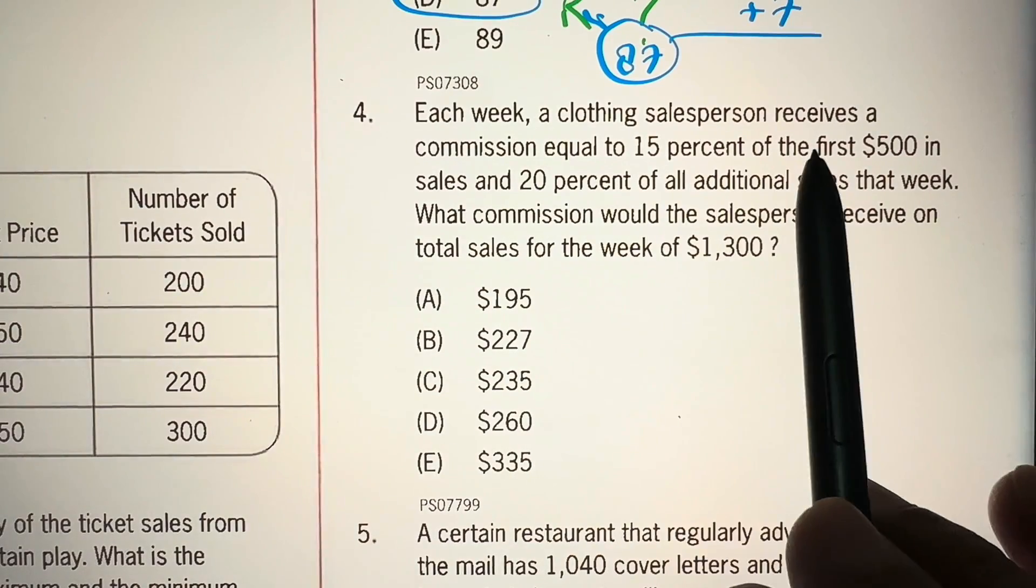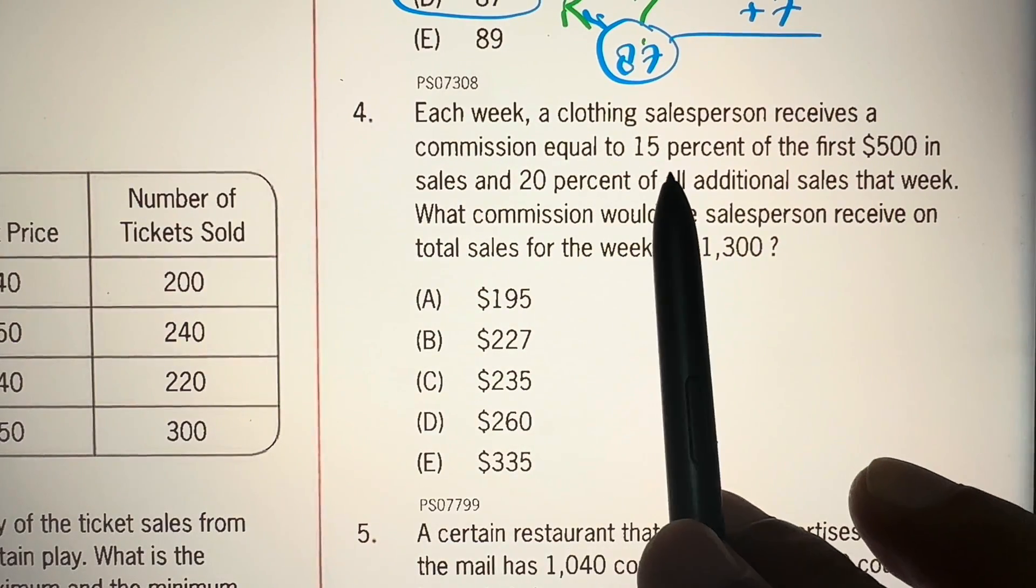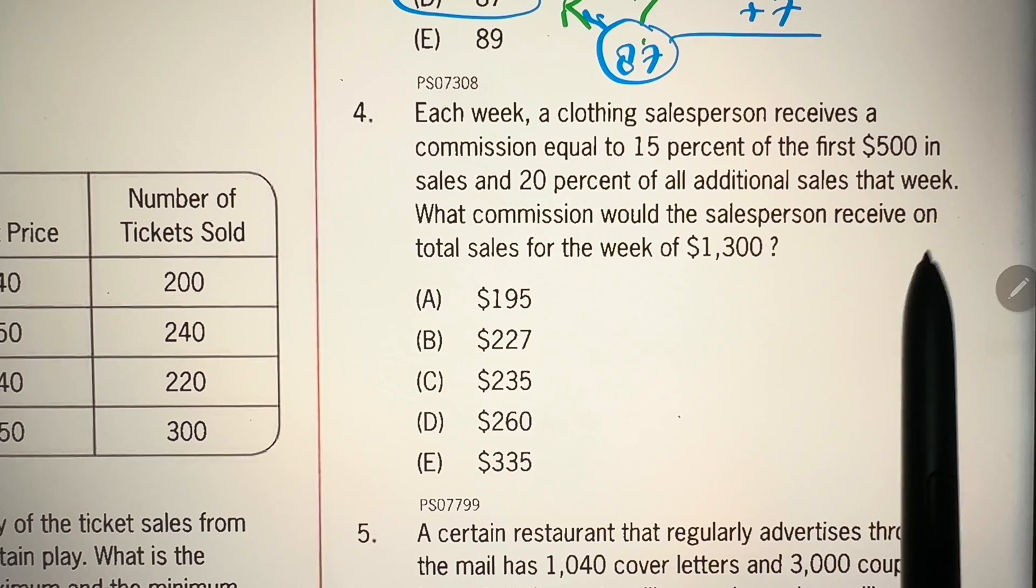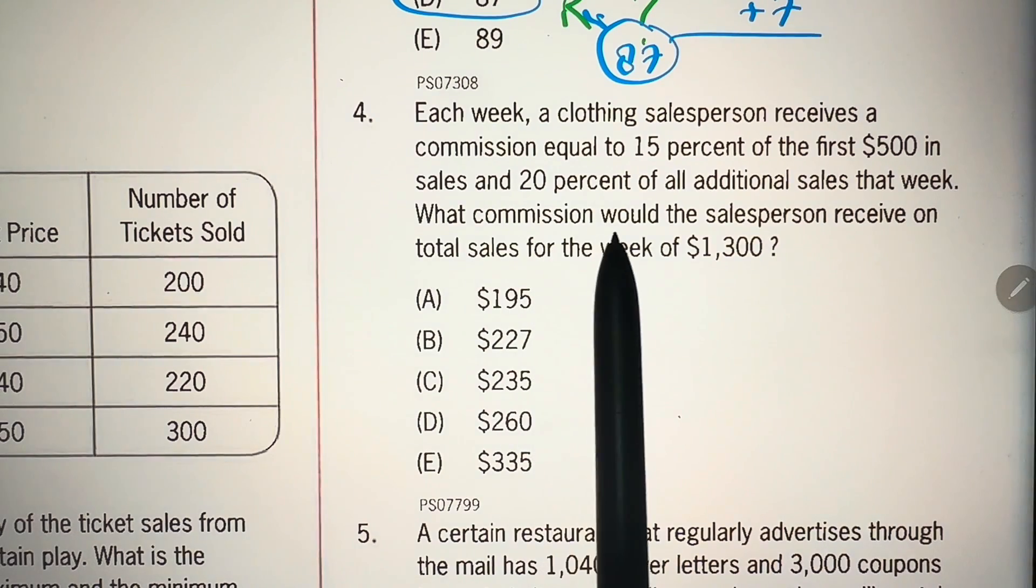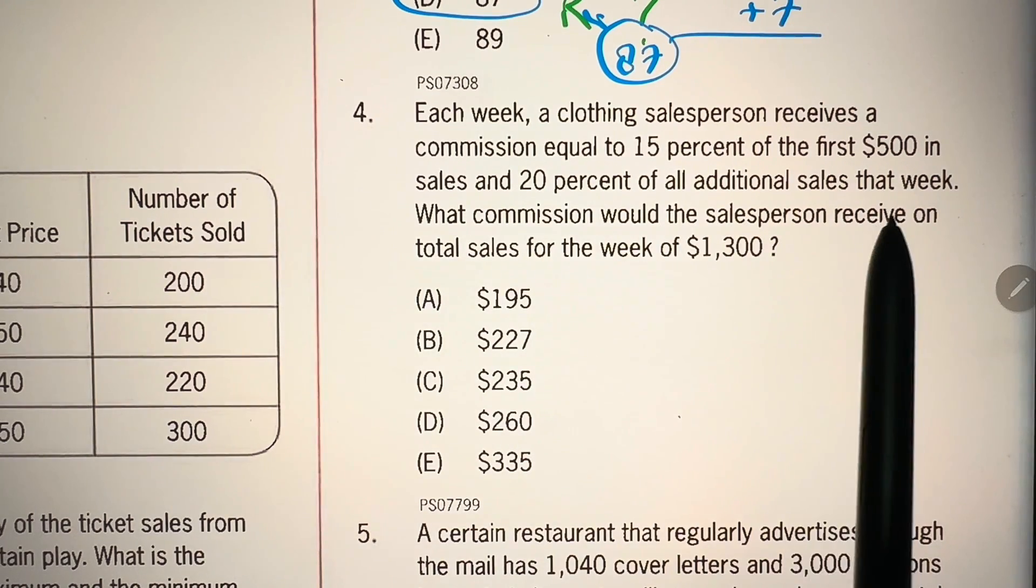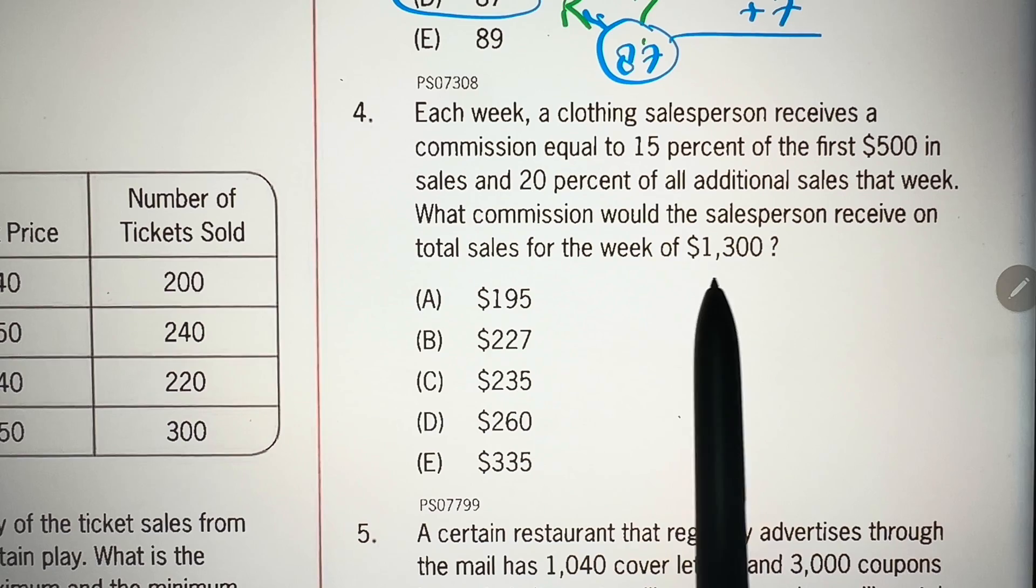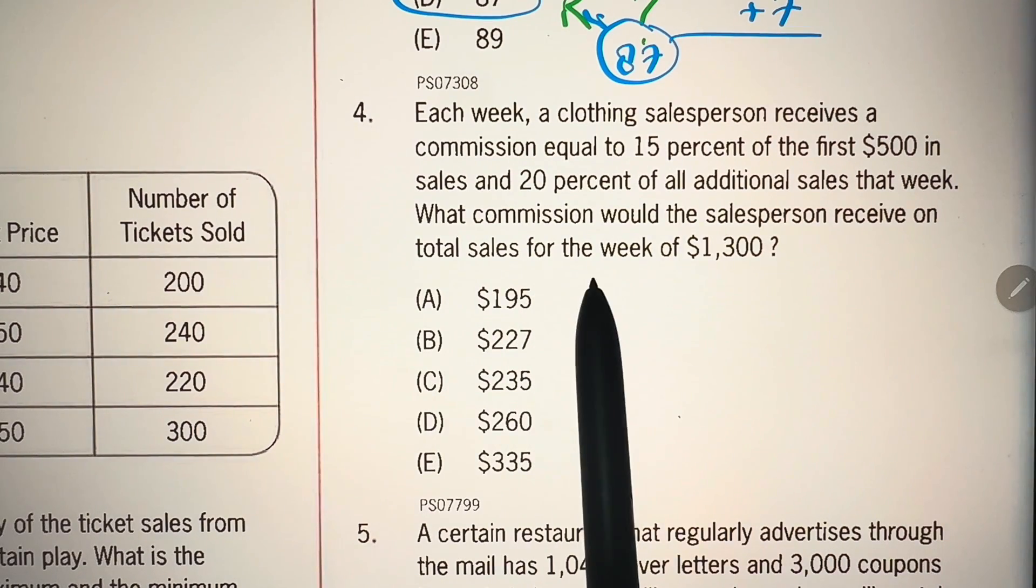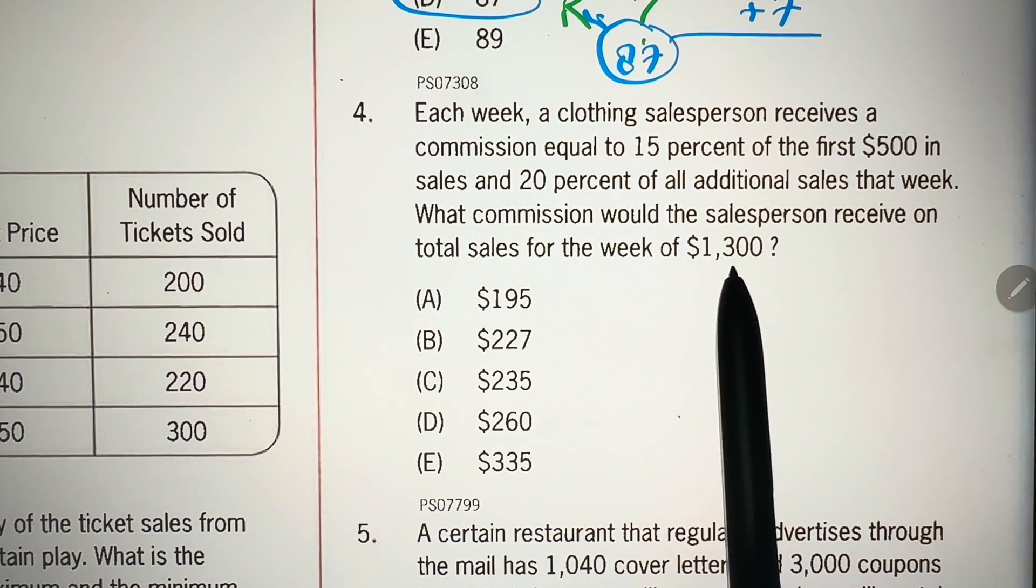Each week, a clothing salesperson receives a commission equal to 15% of the first $500 in sales and 20% of all additional sales that week. What commission would the salesperson receive on total sales for the week of $1,300?